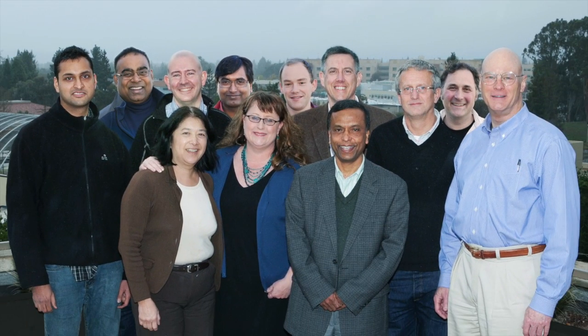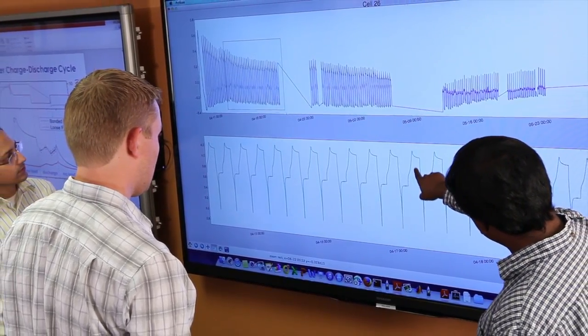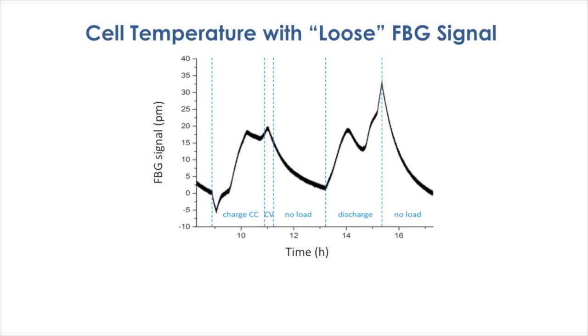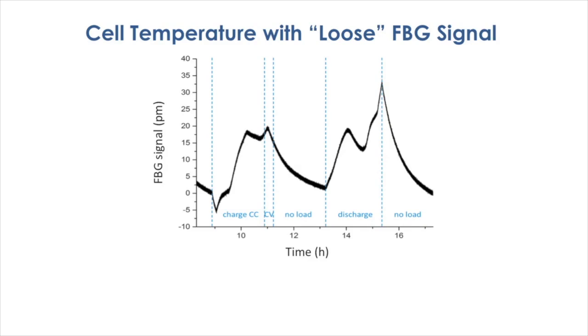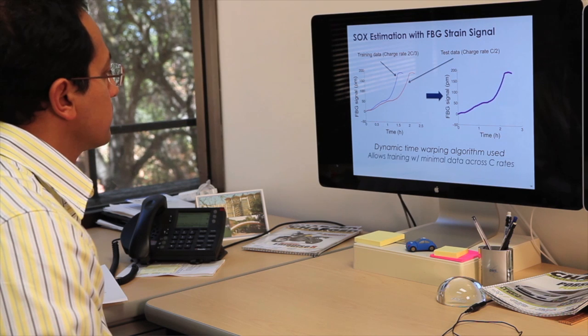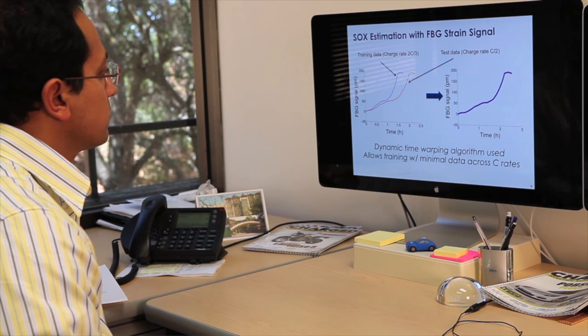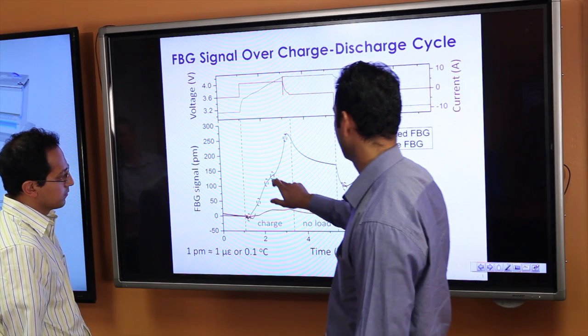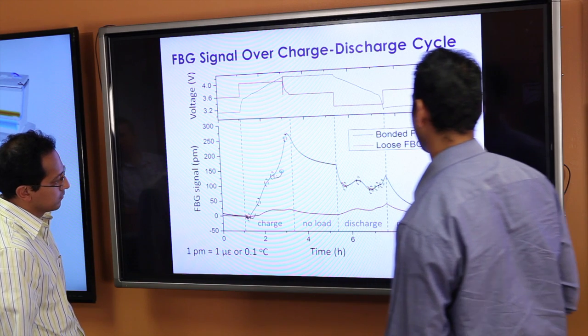Three years into the project, we're really pleased with the results. We've achieved 0.05 micro strain of resolution, 5 millikelvins of temperature sensitivity, and 2.5% or better cell state estimates, enough to see the intercalation stage transitions during charge and discharge cycles.